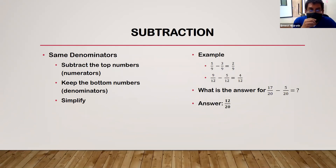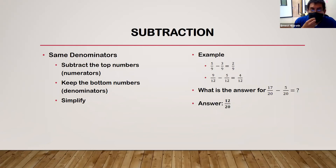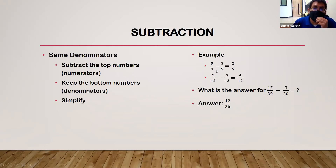Subtraction follows the same rules: if the denominators are the same, subtract the top numbers (numerators), keep the bottom numbers (denominators), and simplify if possible. Example: five-ninths minus three-ninths — the denominators are both nine, so subtract the numerators: 5 minus 3 equals 2, giving two-ninths.